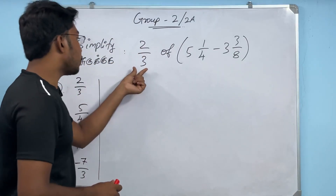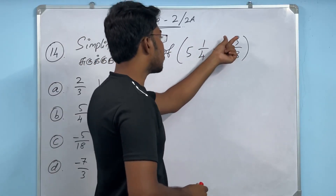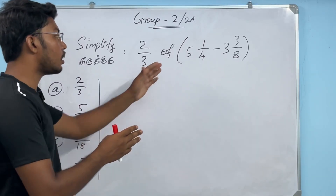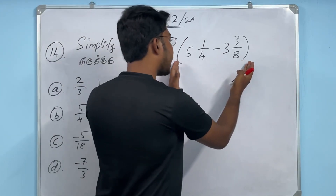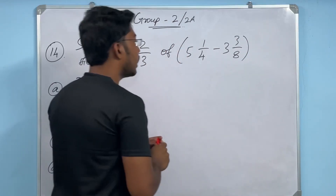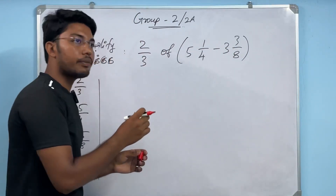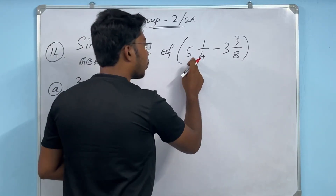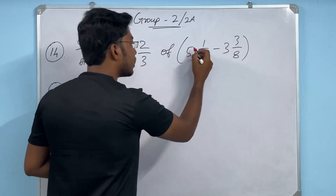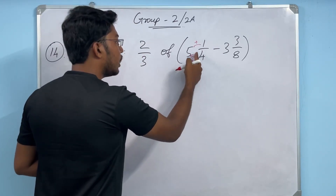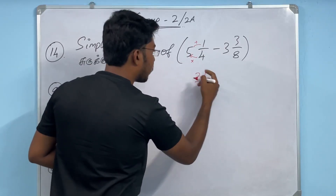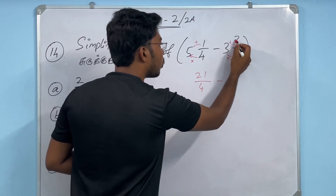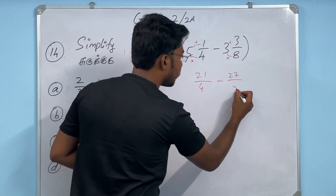Simplify: 2/3 of 5 and 1/4 minus 3 and 3/8. First, solve the bracket. There are mixed fractions, so convert them to normal fractions. Multiply the whole number by the denominator and add the numerator. 5 and 1/4: 5×4=20, 20+1=21, so 21/4. Then 3 and 3/8: 3×8=24, 24+3=27, so 27/8.